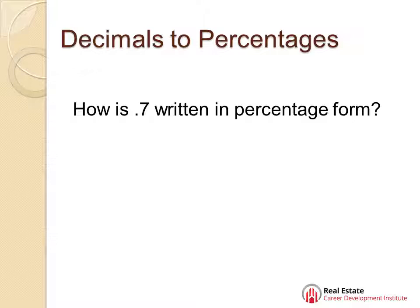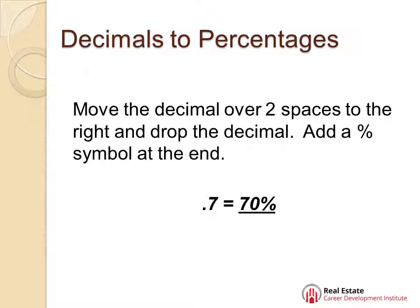Okay, so let's change decimals to percentages. How is that done? How is .7 written in percentage form? Move the decimal over two spaces to the right, drop the decimal, add a percentage symbol at the end. There you go. .7 equals 70%.